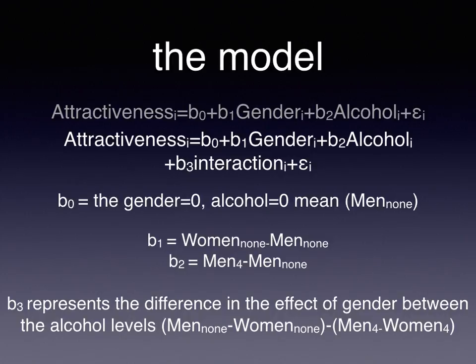If you follow Field's chapter and do the math, you can discover that B-sub-one will be equal to the difference between women and men in the no-alcohol condition alone. Similarly, B-sub-two is equal to the difference between the mean of men who had four pints and the mean of men who had none — so this represents the alcohol effect for men at the baseline level of gender. B-sub-one represents the gender effect at the baseline level of alcohol, and B-sub-two is the alcohol effect at the baseline level of gender, which is men.